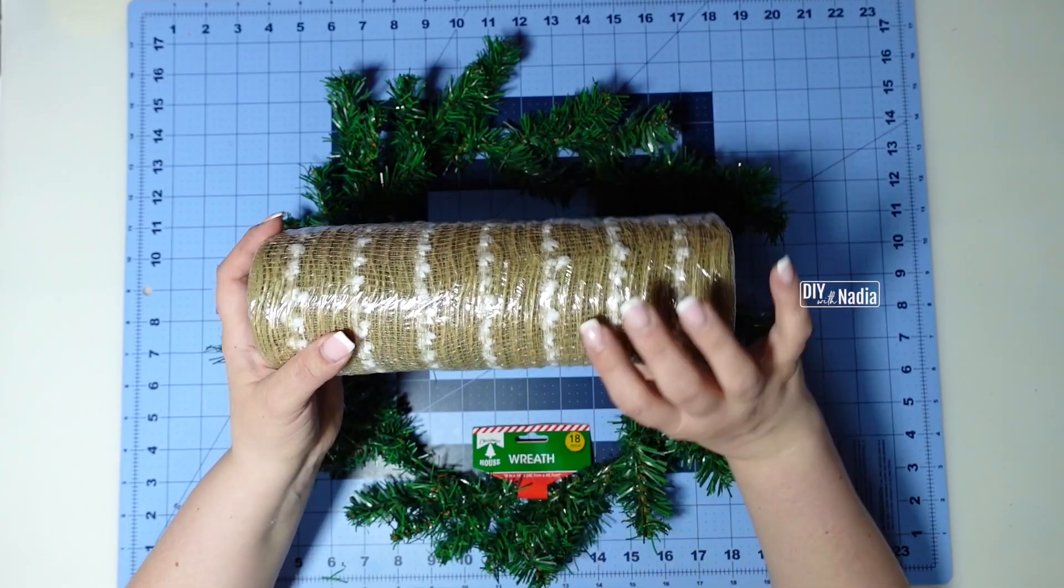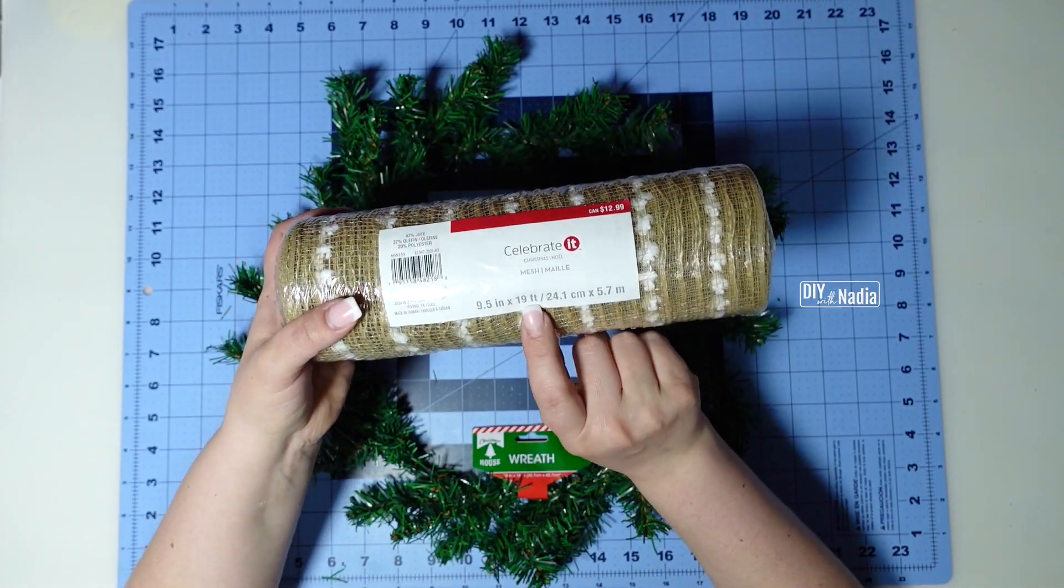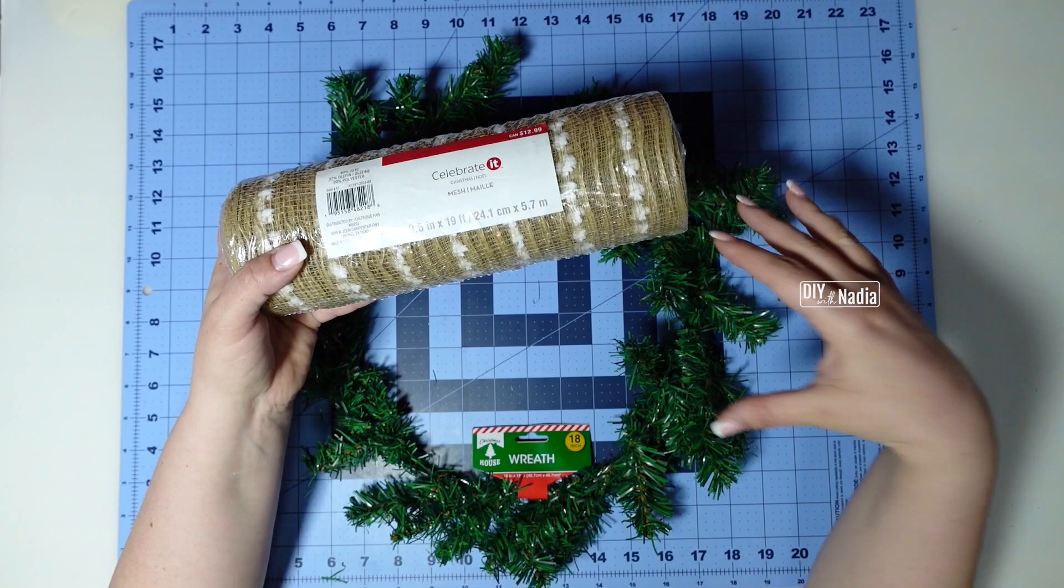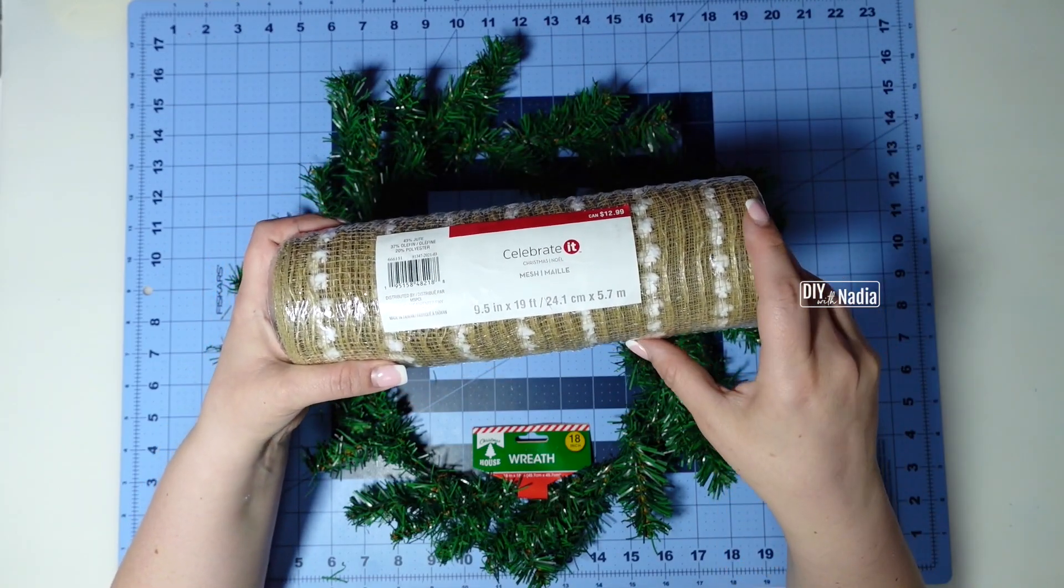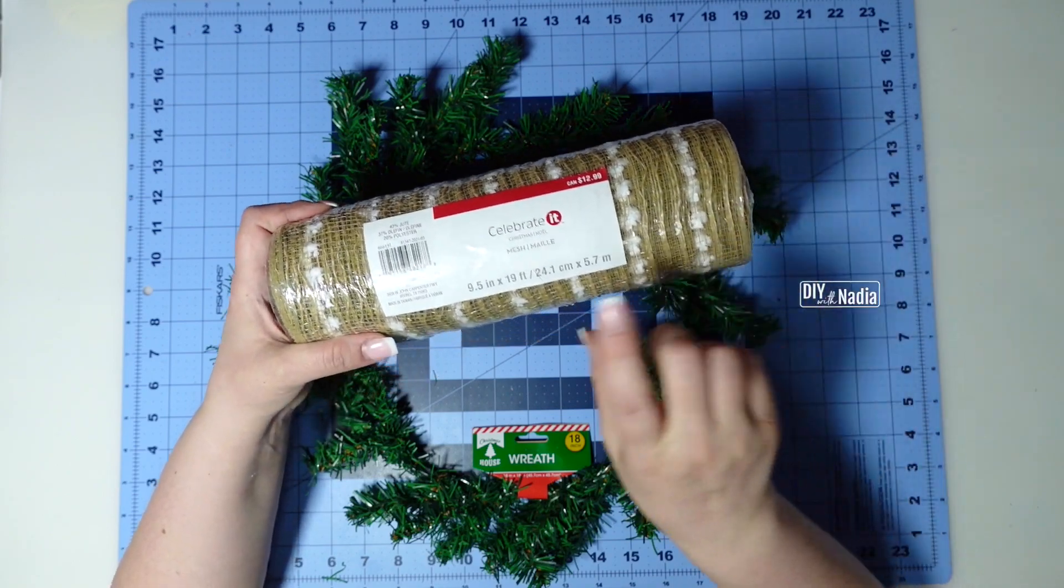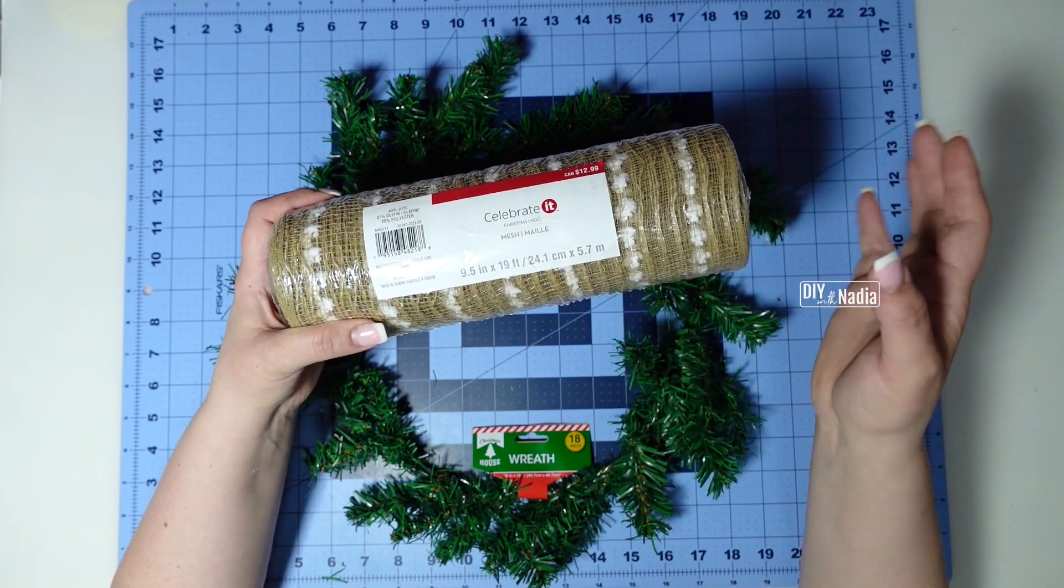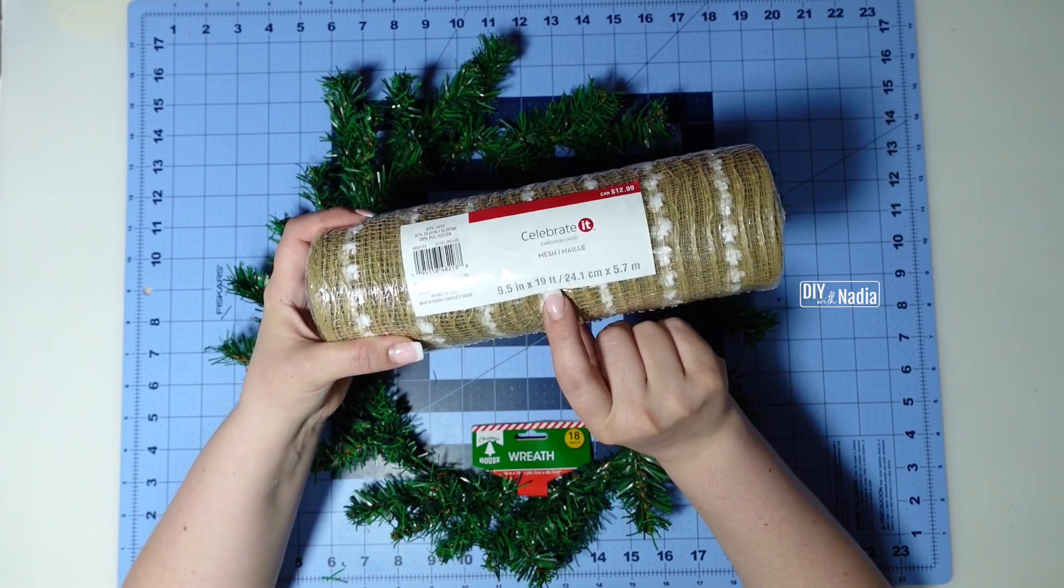When using burlap deco mesh always look at the length because they're more expensive than the regular deco mesh and it usually does not come in the 10 yards that we're used to. So this one's nine and a half inches so almost 10 inches and it's 19 feet.